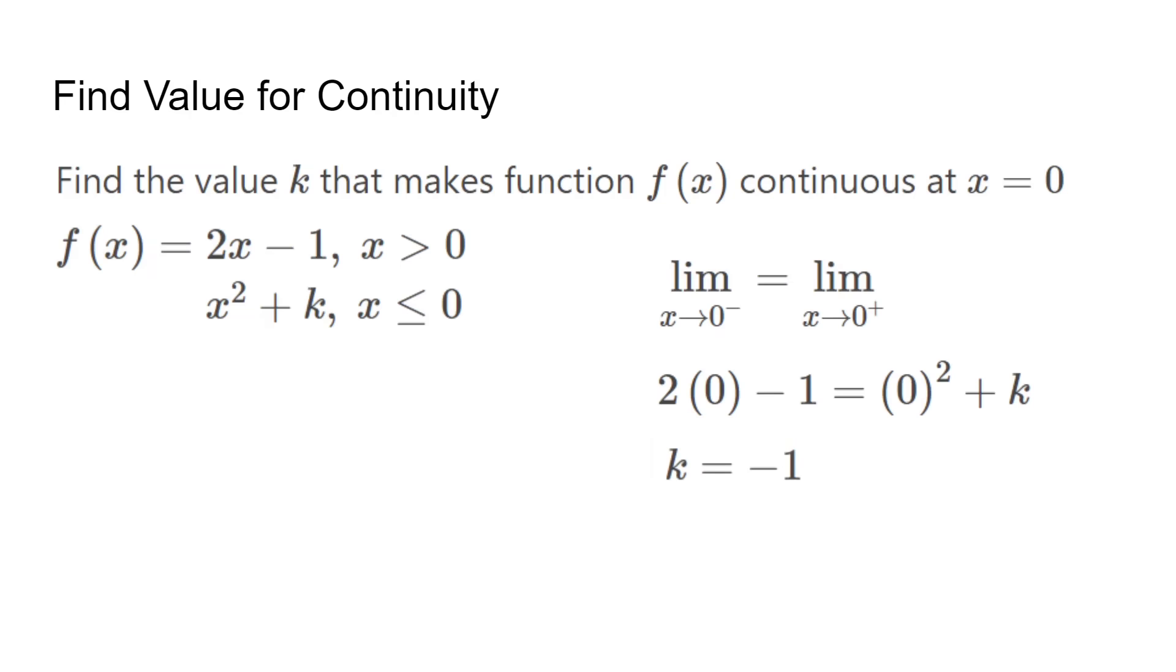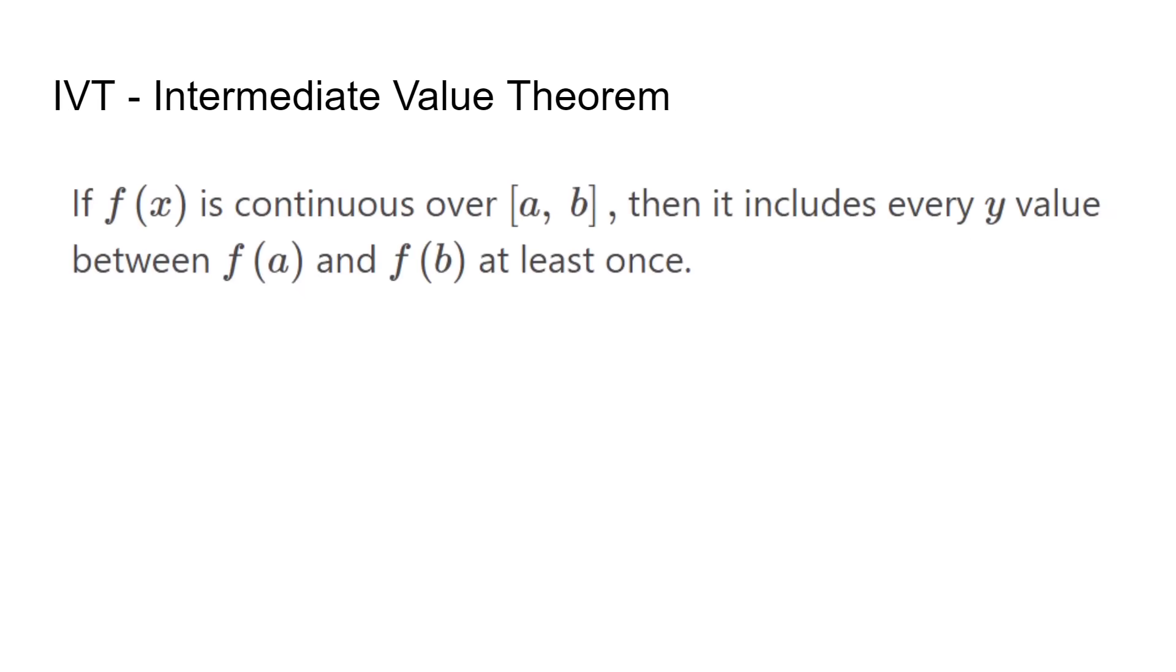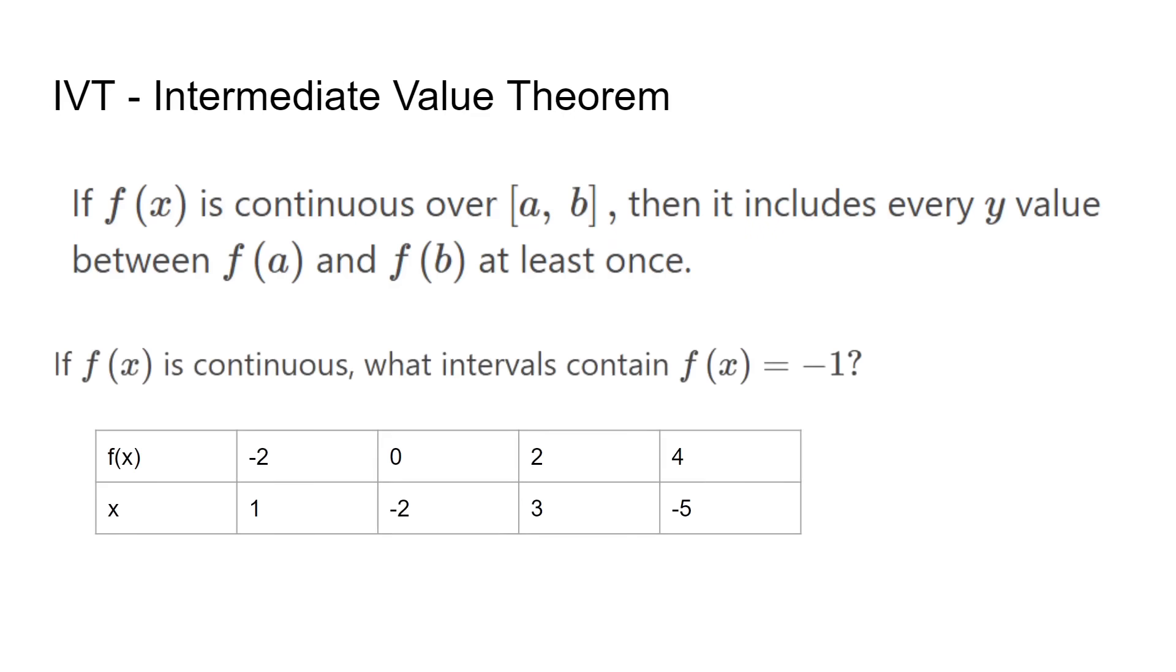The IVT, which is also known as the intermediate value theorem, is a theorem that involves continuity. It says that if a function f(x) is continuous on the interval [a, b], then it includes every y value between f(a) and f(b) at least once. In this example problem, all three intervals contain negative 1 because it is between 1 and negative 2, negative 2 and 3, and 3 and negative 5.